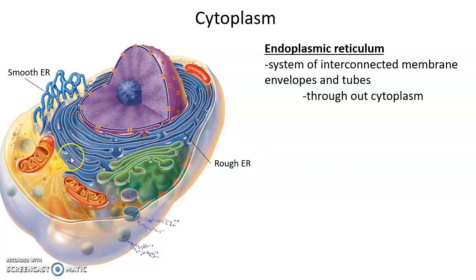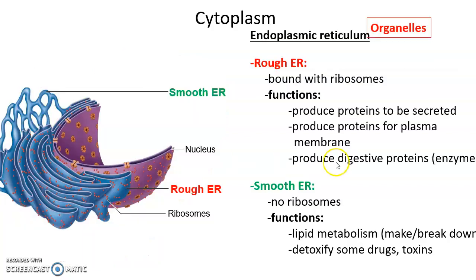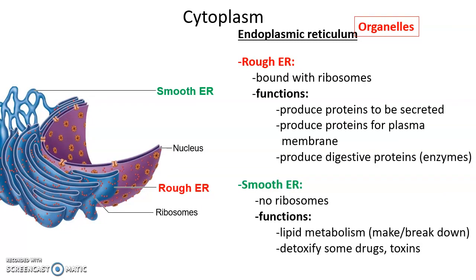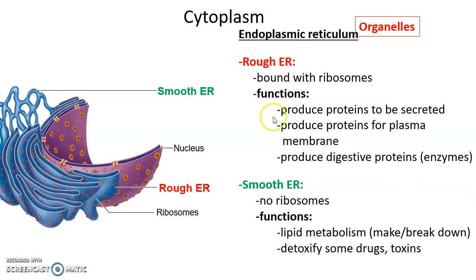The endoplasmic reticulum extends throughout the cytoplasm. The rough endoplasmic reticulum is called rough because it is bound to ribosomes, making it look bumpy under a light microscope. The functions of the rough ER include the production of proteins to be secreted by the cell, proteins that will be in the plasma membrane such as receptors and transmembrane proteins, and also digestive enzymes that need to be carefully isolated within the cell so they don't break the cell down.